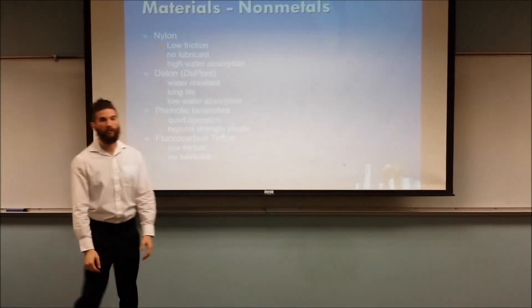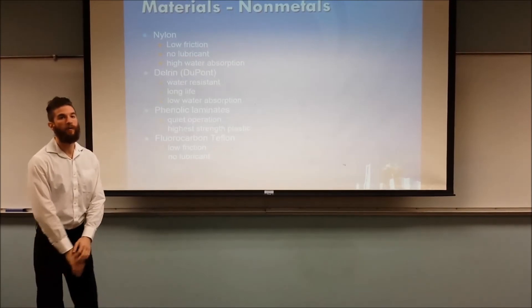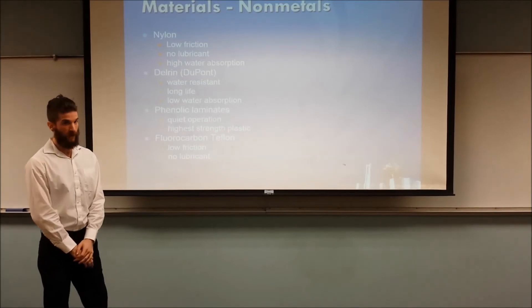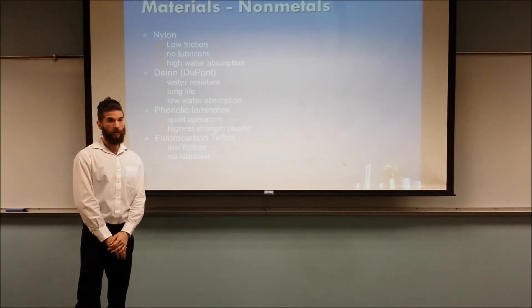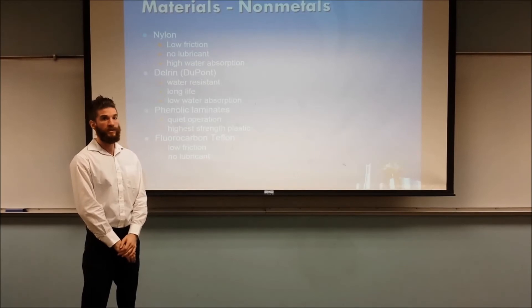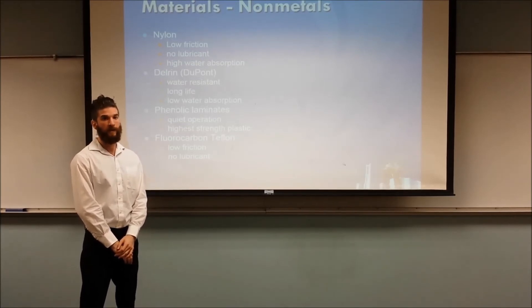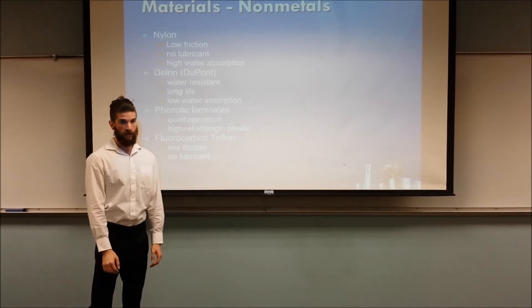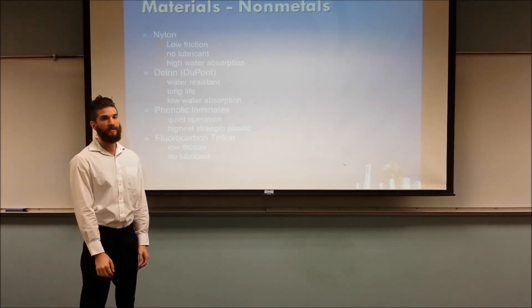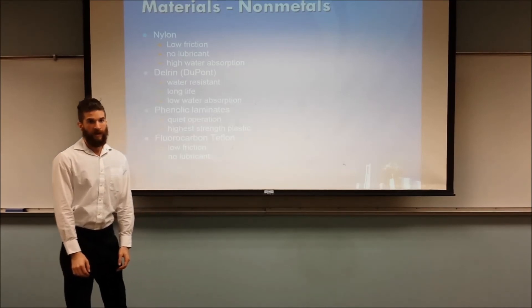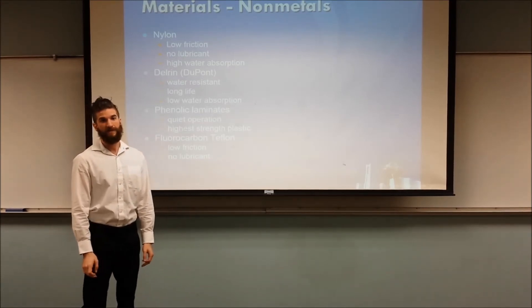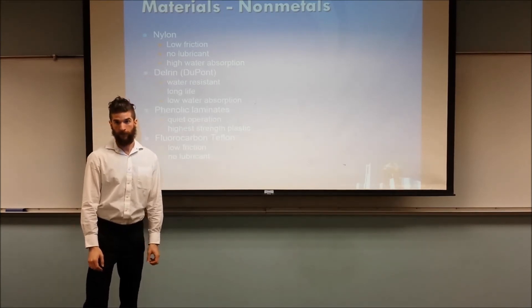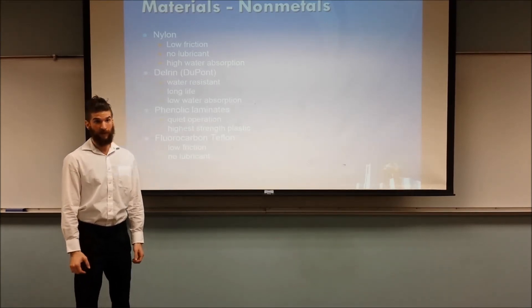In addition to metals, there's also non-metals, which have their unique benefits over metallic materials. Such as nylon, which has very low friction, does not require lubricant, and has very high water absorption. There's delrin, which is a kind of plastic made by DuPont, which is water resistant, has a long life, and low water absorption. There's phenolic laminates, which provide quiet operation and the highest strength of all the plastics. And there's also fluorocarbon teflon, which is low friction and does not require lubricant. Up next we have Josh for some examples of applications.